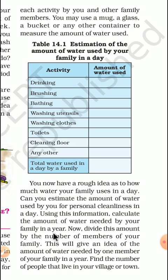This is the water used in a day, so multiplied by 365 — that is the water used by your family in a single year, or the water needed by your family in a single year. Now divide this amount by the number of members of your family. This will give an idea of the amount of water needed by one member of your family in a year.